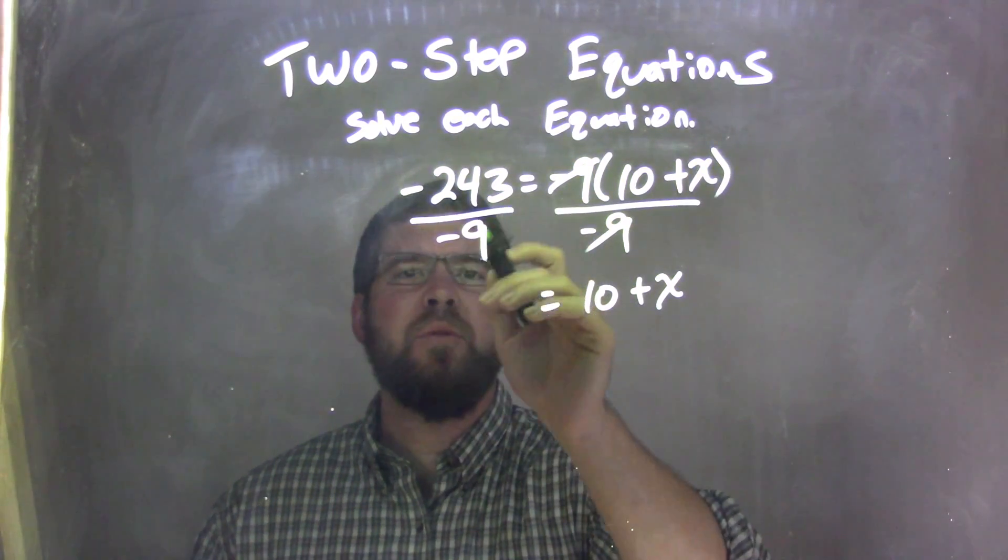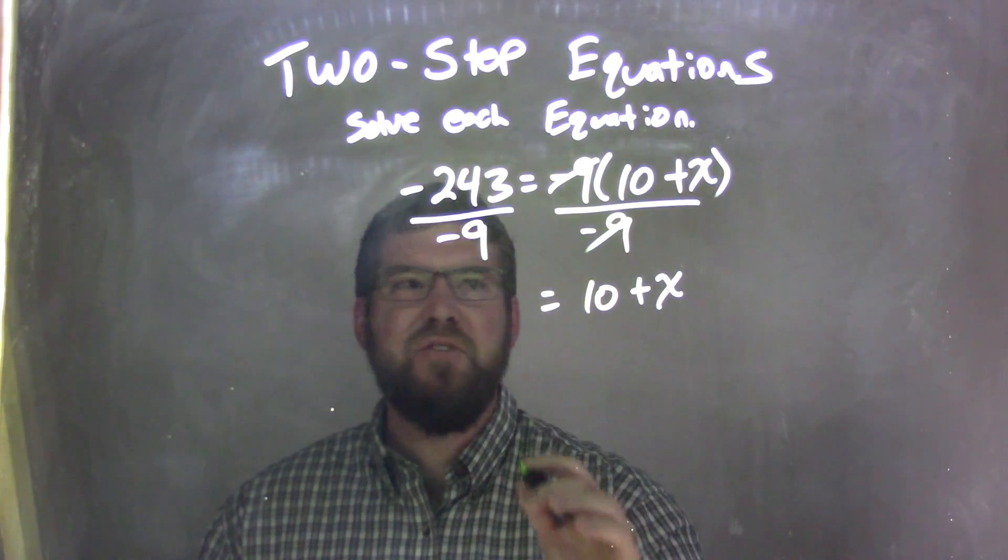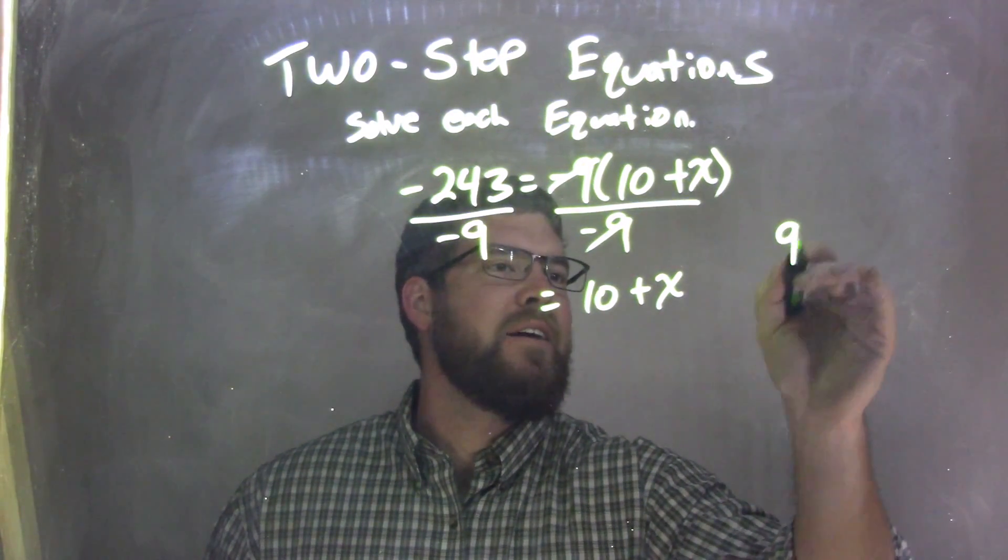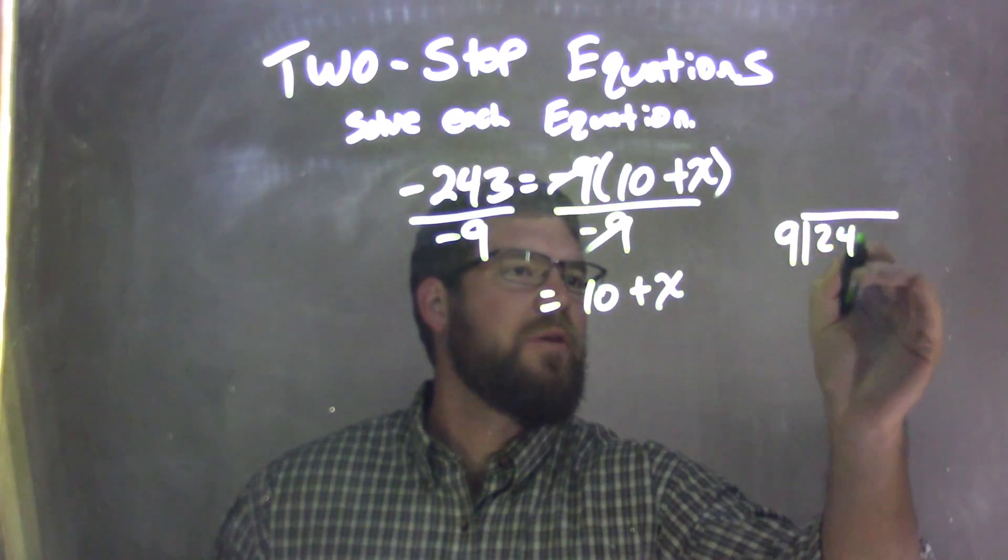Well, now we have 243 divided by 9. Let's do some long division, because I don't know that off the top of my head. So 9 goes into 243.